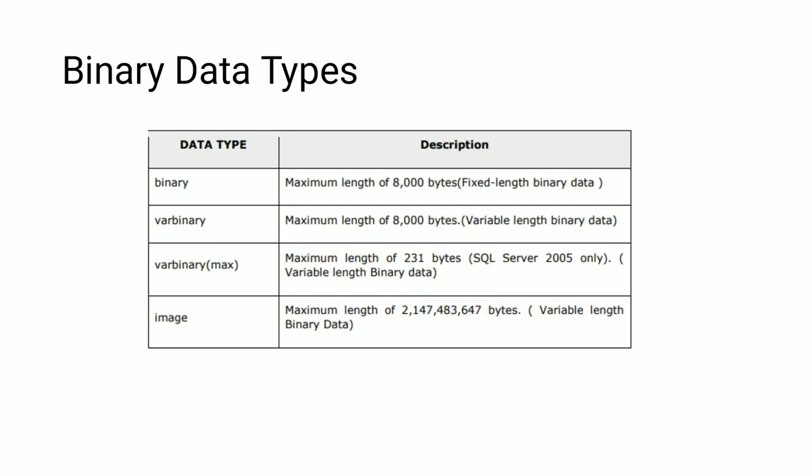Binary data types include BINARY, VARBINARY, VARBINARY(MAX), and IMAGE. BINARY has a maximum length of 8000 bytes and is of fixed length. VARBINARY has a maximum length of 8000 bytes and is variable length. VARBINARY(MAX) has a maximum length of 2^31 bytes, used in SQL Server 2005 only, and is variable length. IMAGE has a maximum size of 2,147,483,647 bytes and is of variable length.